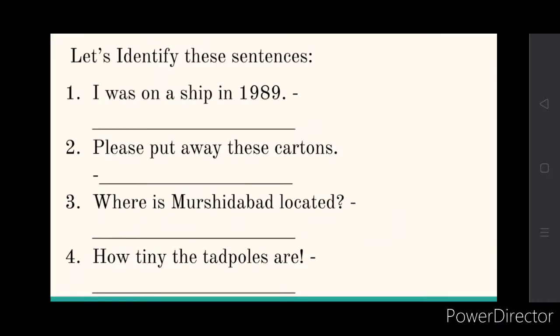Now let's try to identify these sentences based on the four types we've learned. 'I was on a ship in 1989.' This is just a sentence that tells you a fact — so it is a declarative sentence.